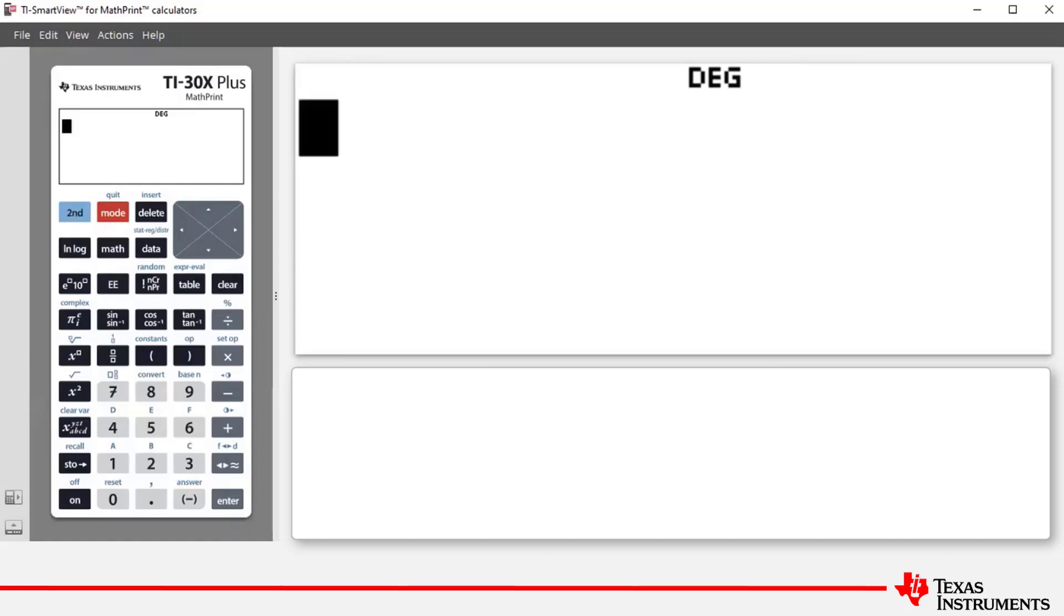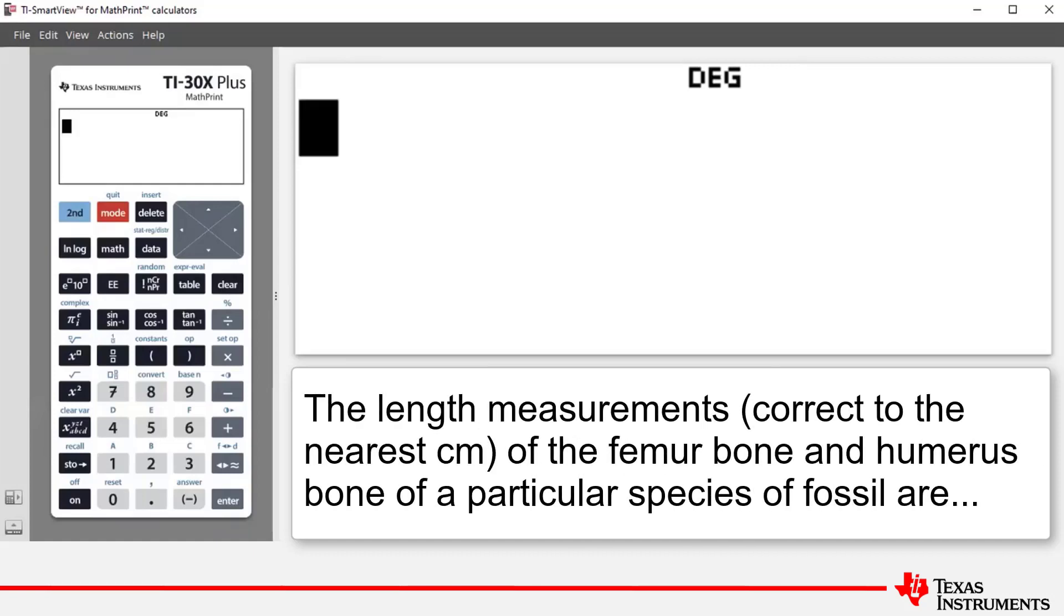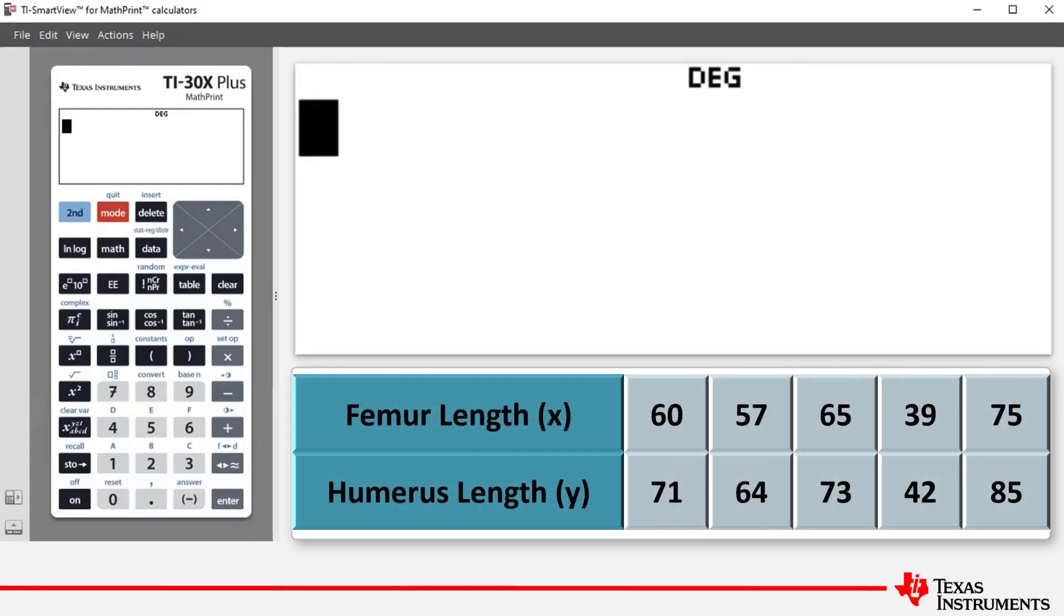The example is as follows. The length measurements correct to the nearest centimeter of the femur bone and humerus bone of a particular species of fossil are shown in the following table. Note that the femur lengths are represented by variable X and humerus lengths are represented by the variable Y.